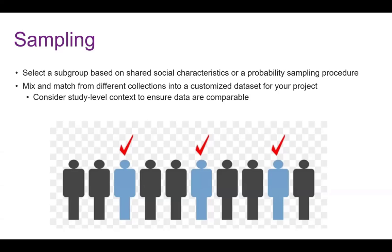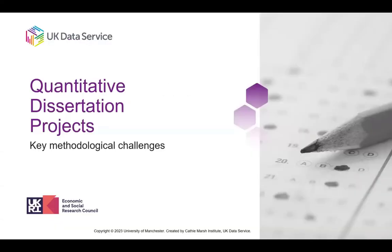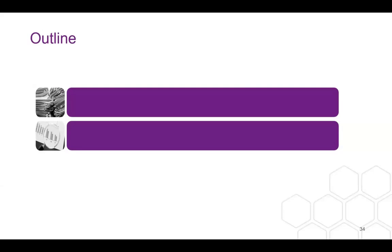I'm going to hand over to Allie now to start talking about quantitative data. Thanks, Maureen. As Maureen said, I'm going to give a quick rundown of the key things you need to consider if you're doing a dissertation using quantitative data. I'm going to cover two main areas: selecting your data and getting to grips with and understanding it.